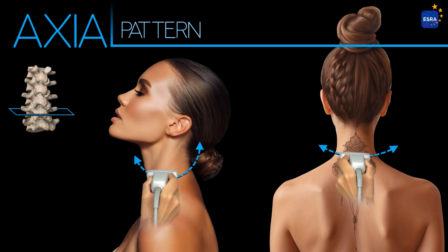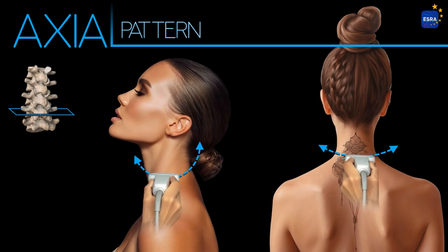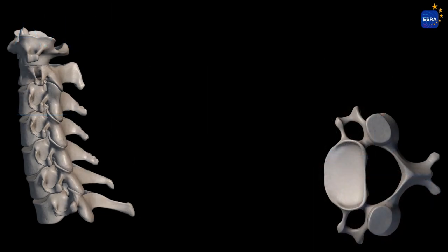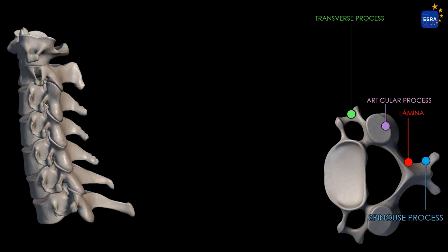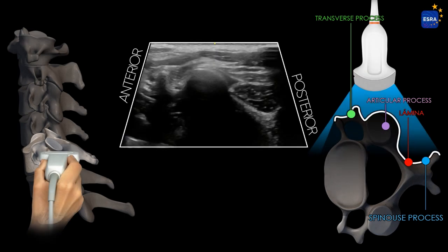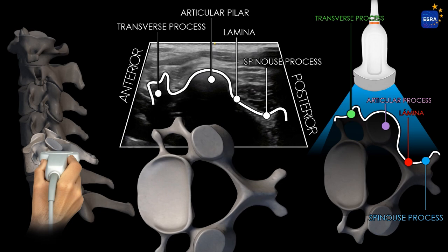For the acquisition of axial plane images, the transducer is positioned in a lateral axial orientation placed over the midpoint of the neck, typically corresponding to the C4 to C5 vertebral level. This anatomical location serves as the recommended starting point for any ultrasound scanning. At this level, the anterior pillar is visualized, formed by the transverse processes and the nerve roots corresponding to each spinal level. The articular pillar is identified in the most lateral aspect, while the posterior vertebral arch is delineated by the laminae and spinous processes.